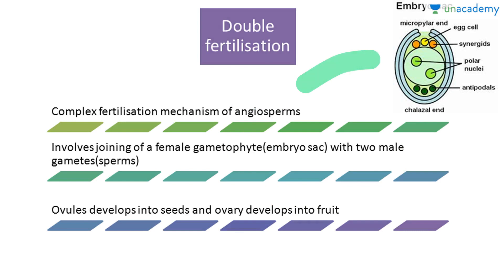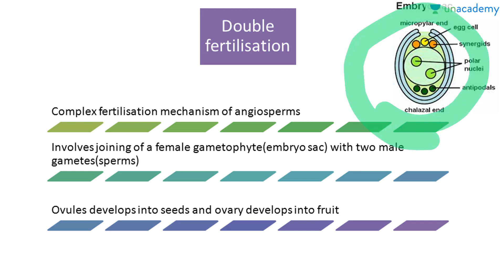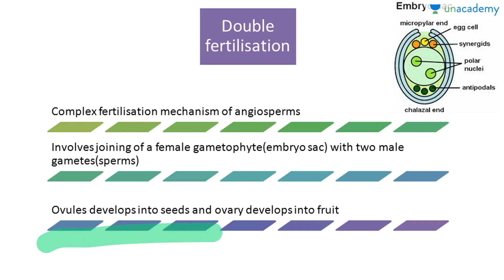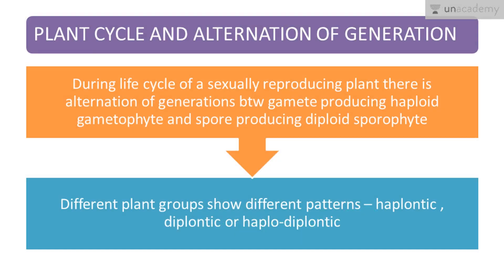Now we will talk in detail about double fertilization. Here you can see the picture for double fertilization. It is a complex fertilization mechanism of angiosperms. It involves the joining of the female gametophyte, which is the embryo sac, with two male gametes. Ovules develop into seeds — this is important — and the ovary develops into fruit.